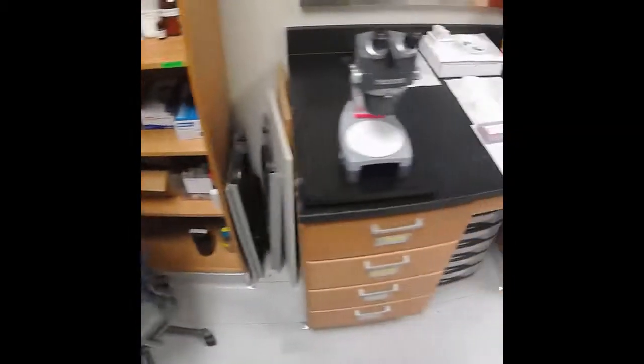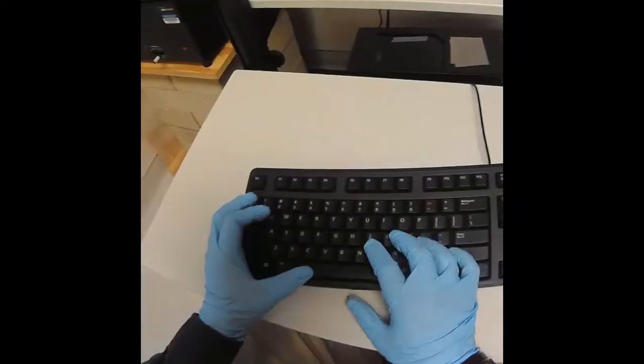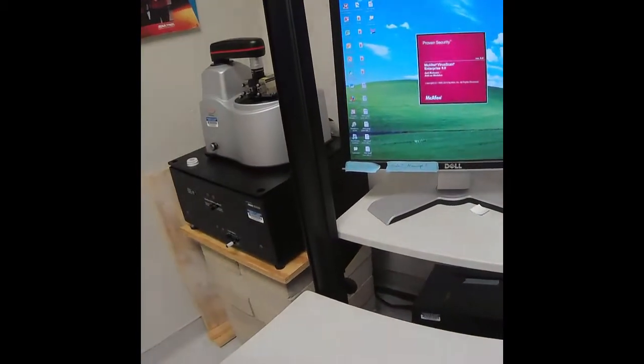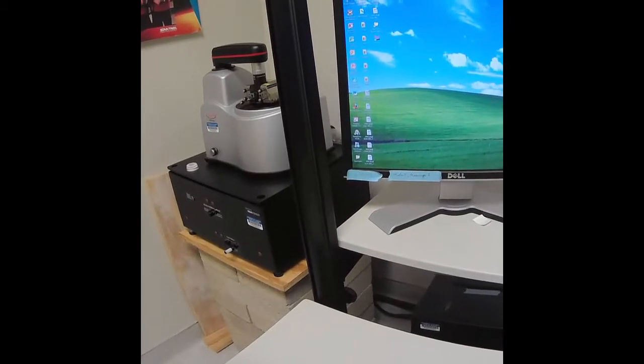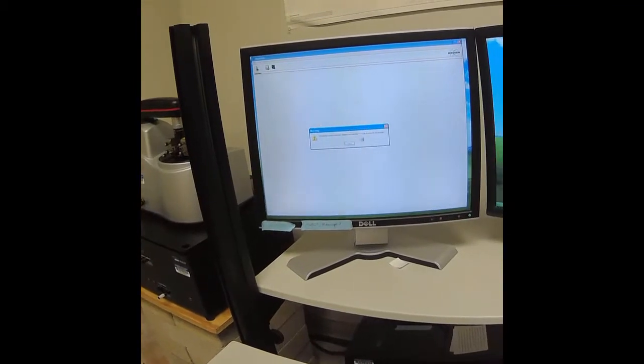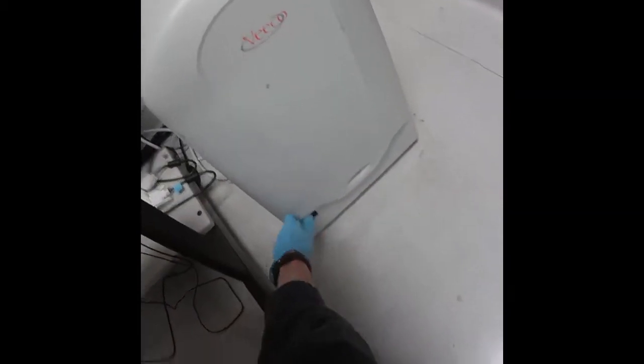On the computer, log in using the credentials on the screen. The software we want to use is called NanoDrive. When that opens up, it's going to tell you that the controller needs to be on. The controller has a power switch right there and a green light. You can see the green light is not on. We have not turned it on yet. So we'll turn it on.